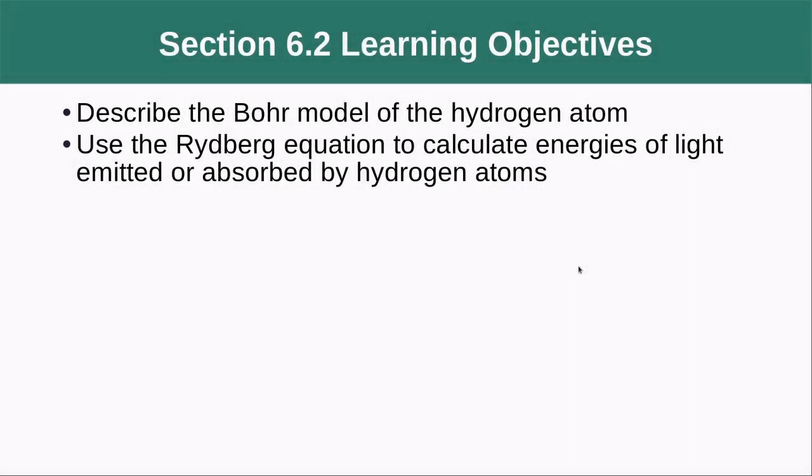In section 6.2 we're going to get into describing the Bohr model of the hydrogen atom and we're going to use the Rydberg equation to calculate energies of light emitted or absorbed by hydrogen atoms.